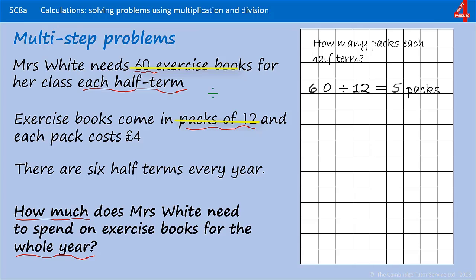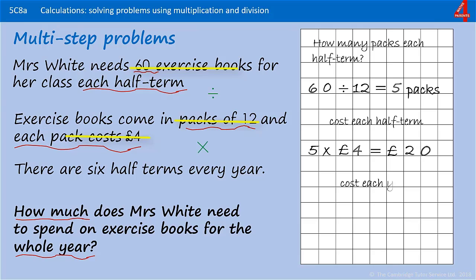So she will need 5 packs of exercise books each half term. Now we need to find out how much she's going to spend each half term. She needs 5 packs of exercise books and each pack costs 4 pounds, so she's going to multiply that 4 pounds by 5, and that's 20 pounds each half term. Remember, the question wants to know how much in a whole year.